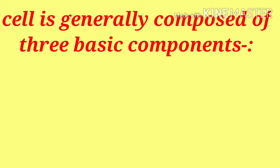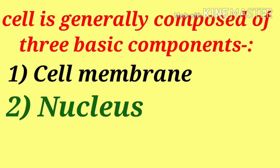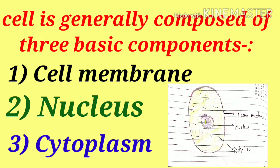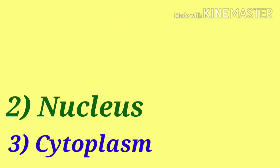If you study any cell, you will see three basic components in any cell. These three basic components are cell membrane, nucleus and cytoplasm. These cell organelles usually are present in every cell. As you can observe in this diagram, plasma membrane, nucleus and cytoplasm present.